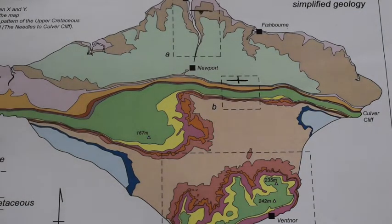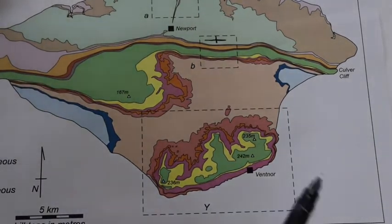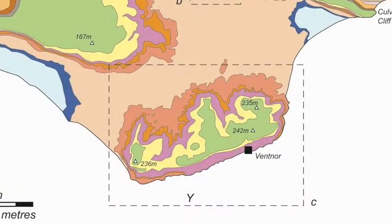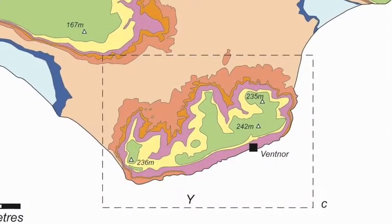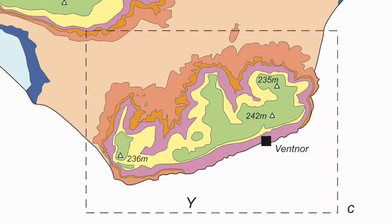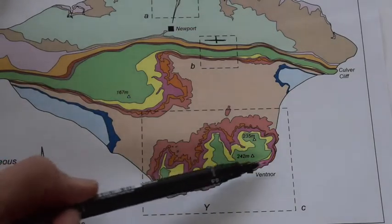Then in the southern point, let's just move the map up a little bit so we can see. This is quite a complicated map pattern, suggesting the rocks are rather gently dipping, interacting with topography. We can see from the map the ground rises up to over 200 meters above sea level, so these are hilltops in here going down to the coast.